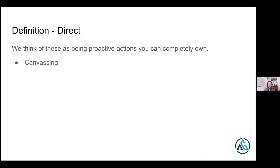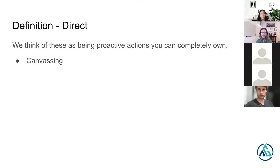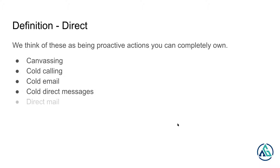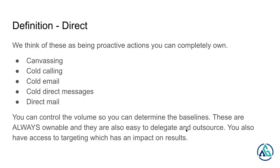For direct outreach, we think of these as the proactive actions that you completely own. The first one is canvassing — those guys selling solar and knocking on doors, that's canvassing. It might also look like cold calling, cold email, or cold direct messages. If you're on LinkedIn or social media as a freelancer, business owner, or consultant, you're probably getting messages from people trying to pitch you. We also lump direct mail in here because you can get very granular in your targeting of who you're trying to reach.